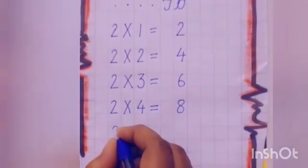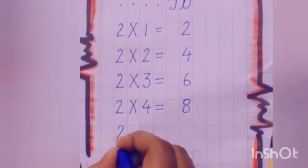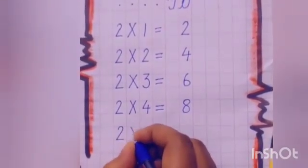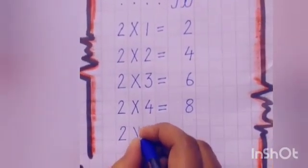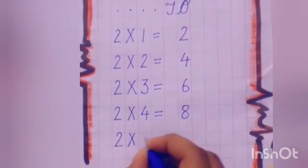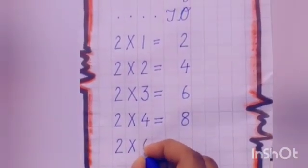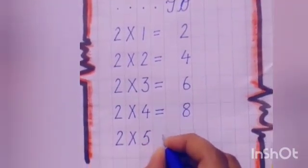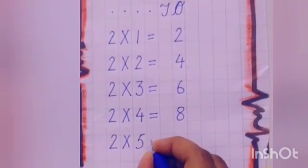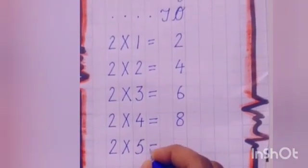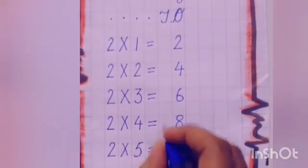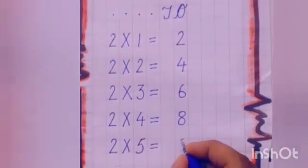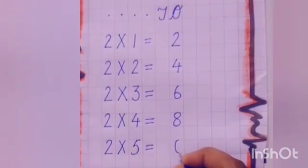Now we will write 2 5s are 10. 1, 0 — 10. So two digits are there. So we will write 0 under 1s.